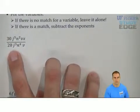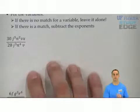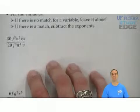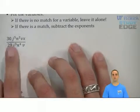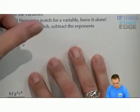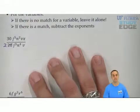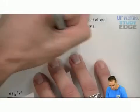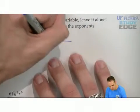30 over 20. What goes into 30 and 20? You have to realize what is the common factor, and in this case the common factor is 10. 10 will go into 30 and 20. 10 goes into 20 two times, 10 goes into 30 three times. So therefore we have three on the numerator and two on the denominator.